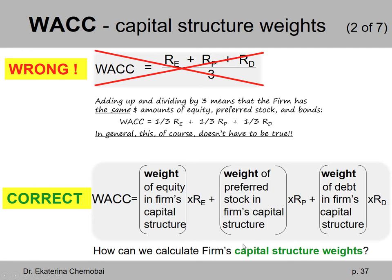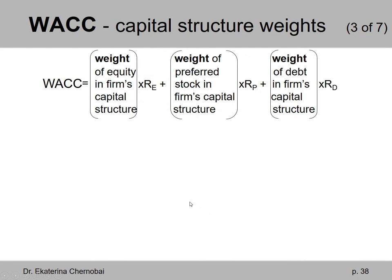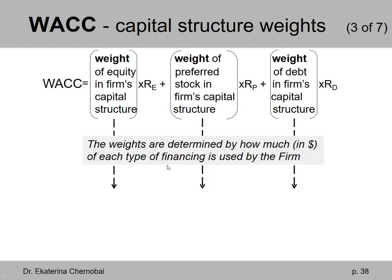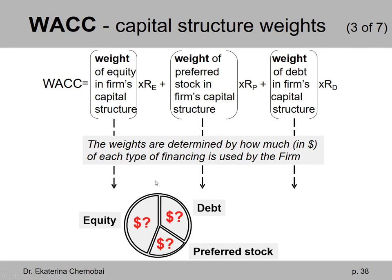So how can we calculate the firm's capital structure weights? The weights are determined by how much money in dollars of each type of financing is used by the firm. You can imagine a pizza-like image representing the value of the firm, split into three sectors of not necessarily equal sizes. One sector is equity, another is debt, and the last one is preferred stock. We need to find the value of these three sections of the firm value.